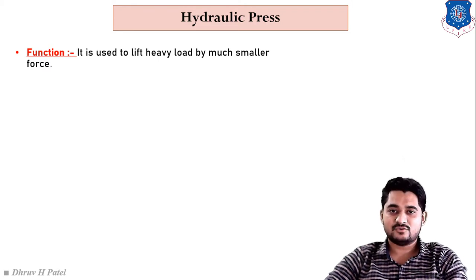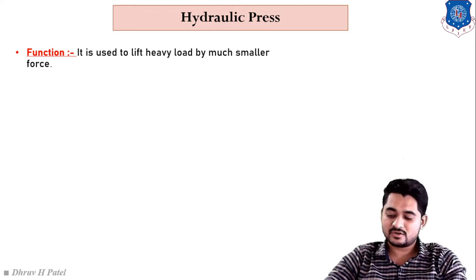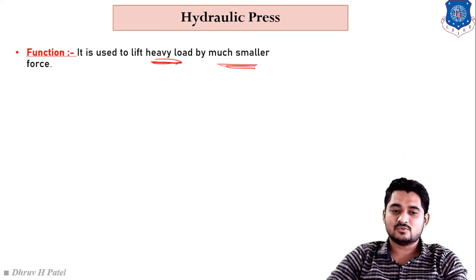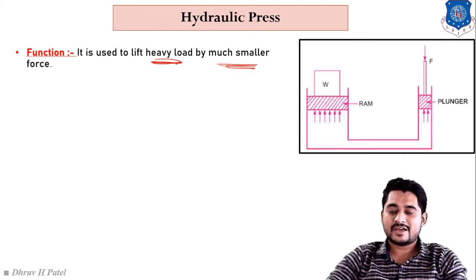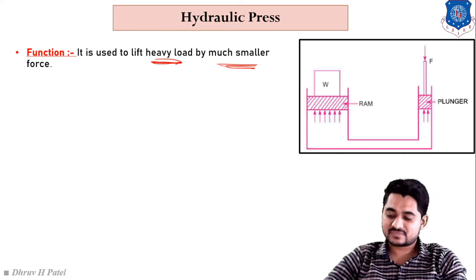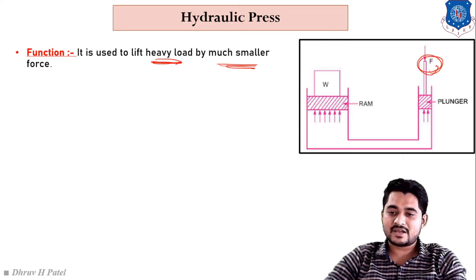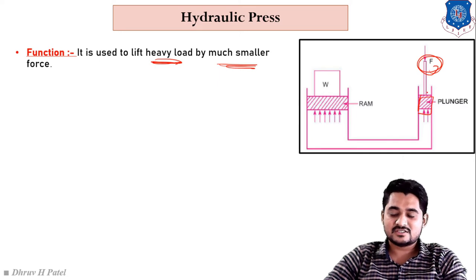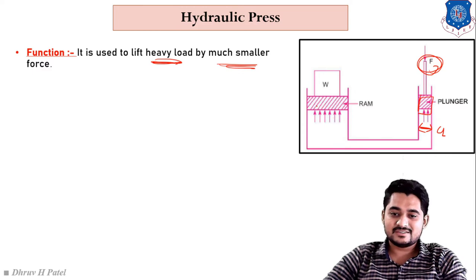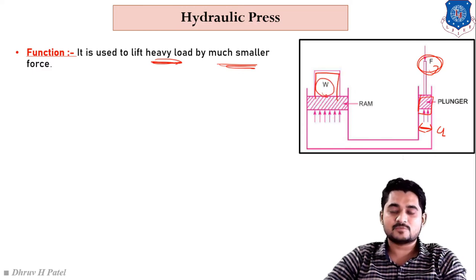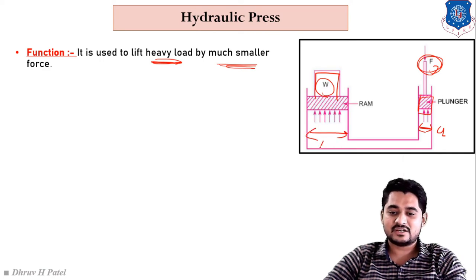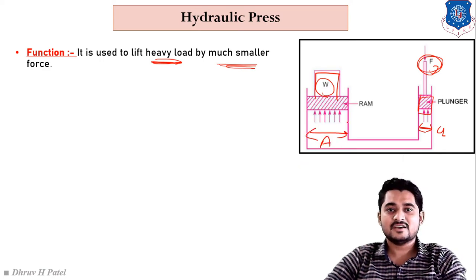It is used for lifting a heavy load by a much smaller force. According to the sketch, one force F is applied on the right-hand side on the plunger, which has a small cross-sectional area 'a'. On the left-hand side, one weight W is placed above the ram, which has a larger cross-sectional area 'A'.